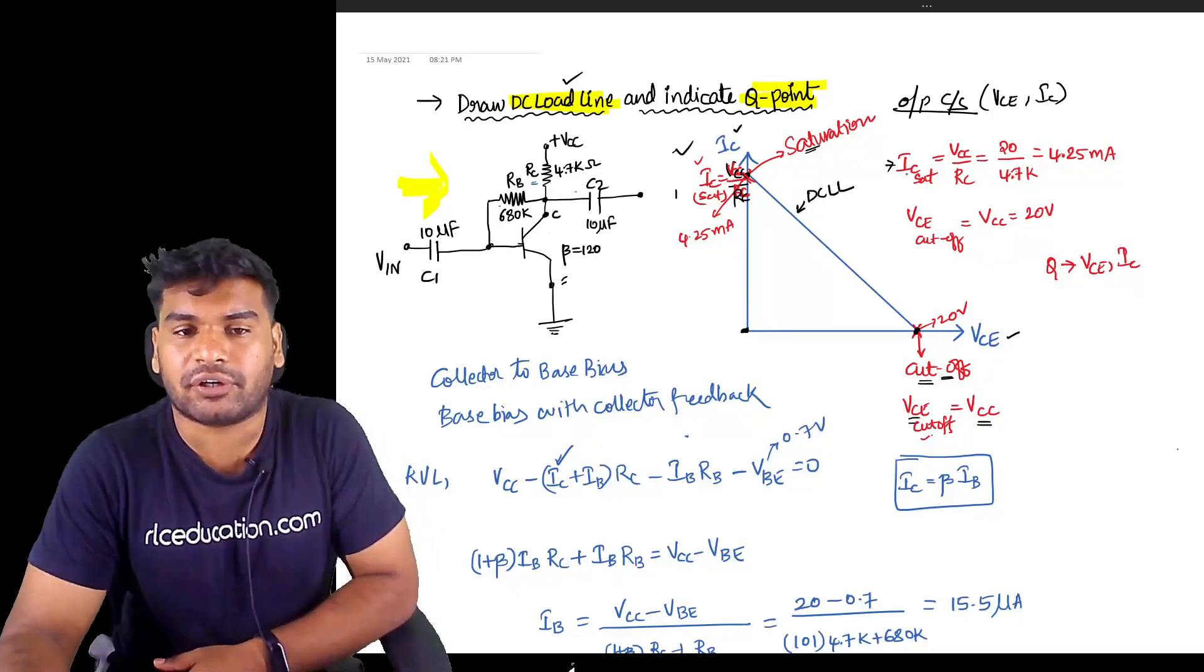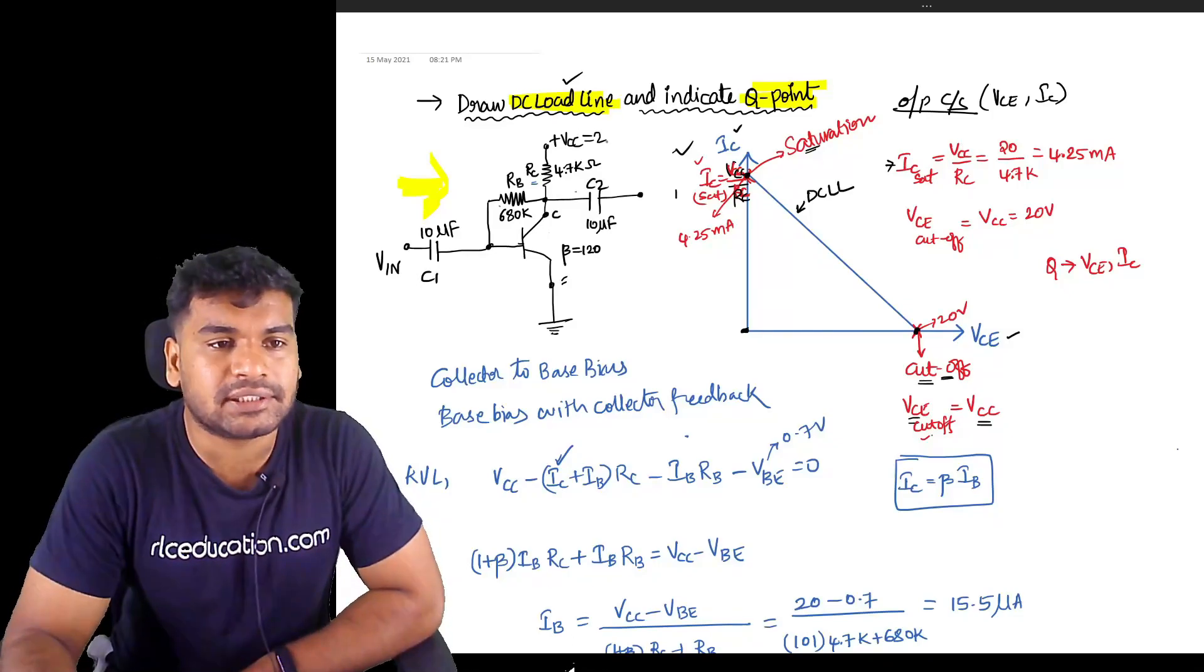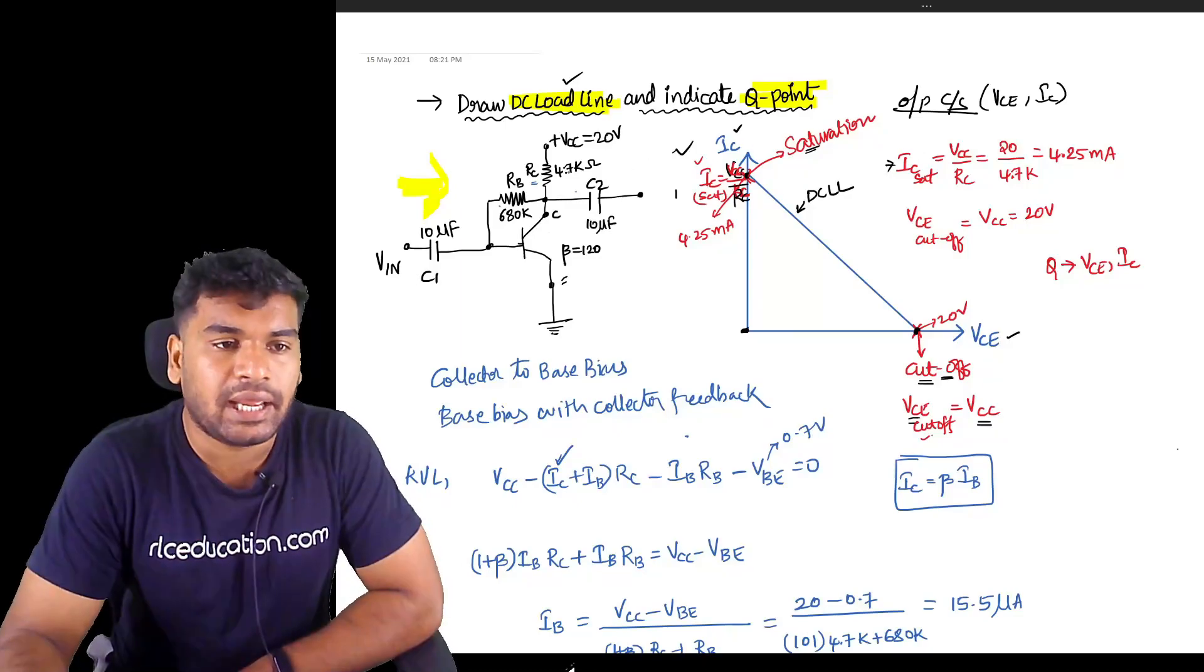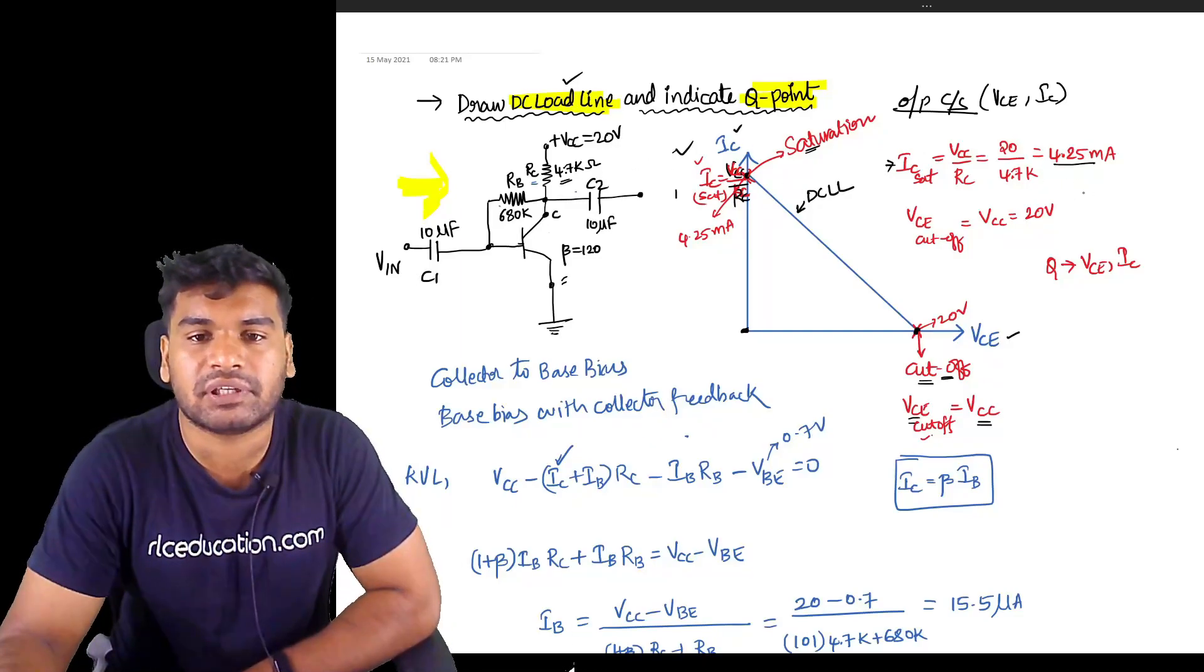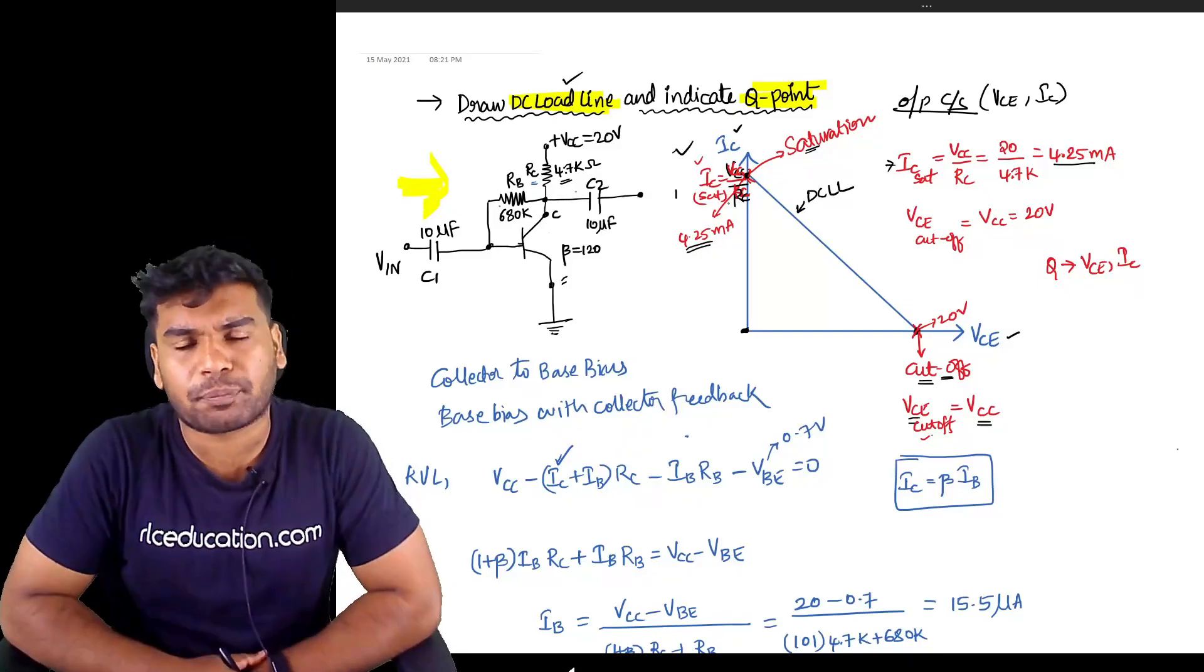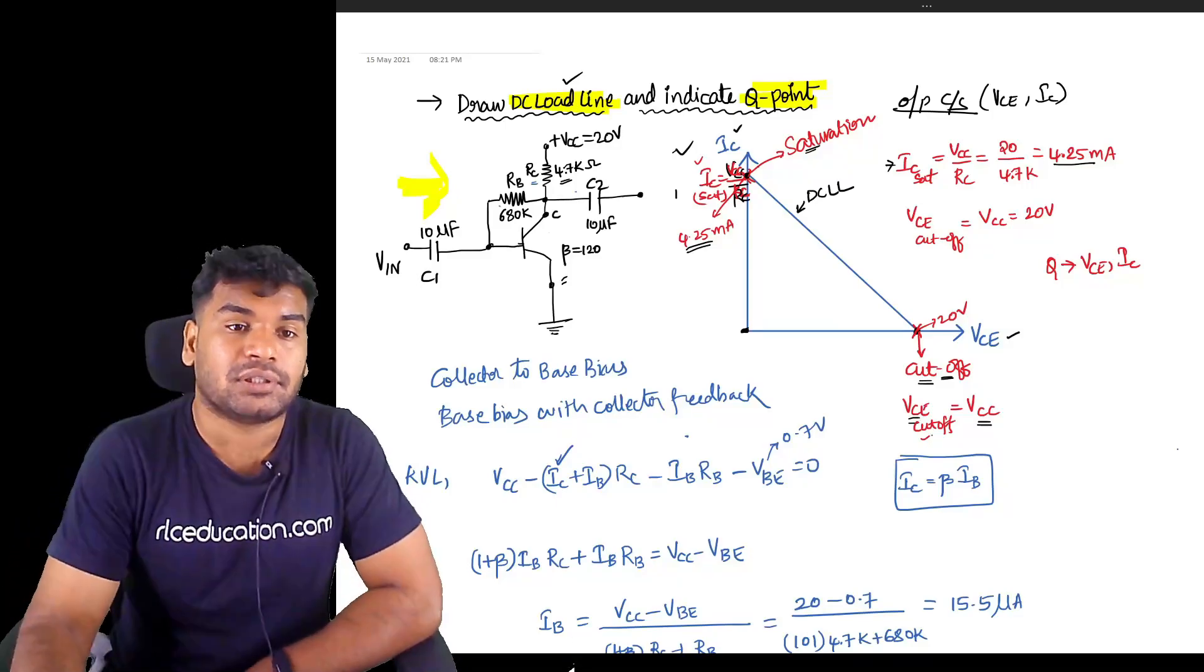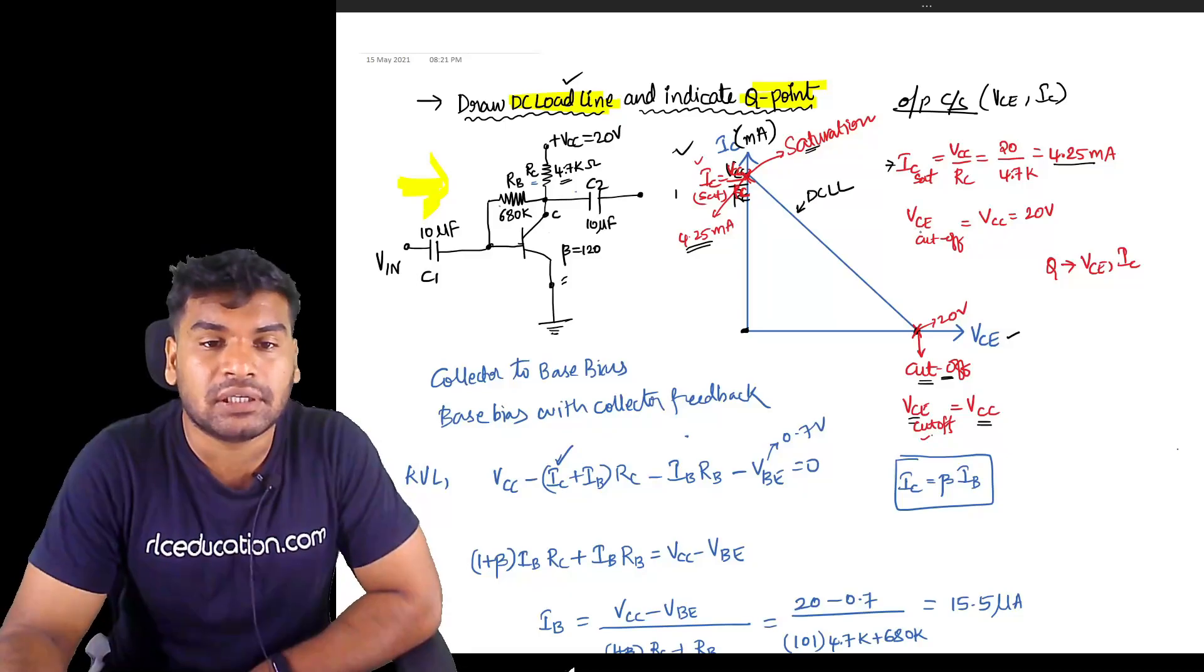Now we will find out those values. IC_sat is equal to VCC by RC. In the question it's given VCC is 20 volts and RC collector resistance is 4.7. So 20 by 4.7 will give you 4.25. This particular point for DC load line is 4.25 milliamperes.